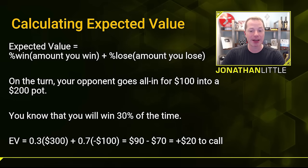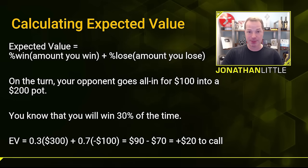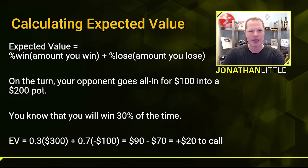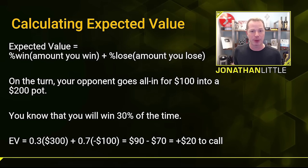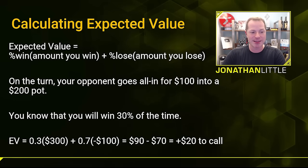Notice, if your opponent bet a whole lot bigger — say they bet $500 into the $200 pot — when you win, you'd win more, but you'd also lose a whole lot more to the point that this number would become negative. So sometimes you're going to have positive expected value by calling, and sometimes you're going to lose. It's important to be able to figure this out. By doing some of this work away from the table, you're going to find that this becomes very intuitive at the table, and a lot of spots will eventually become somewhat obvious, which lets you shortcut these decisions.